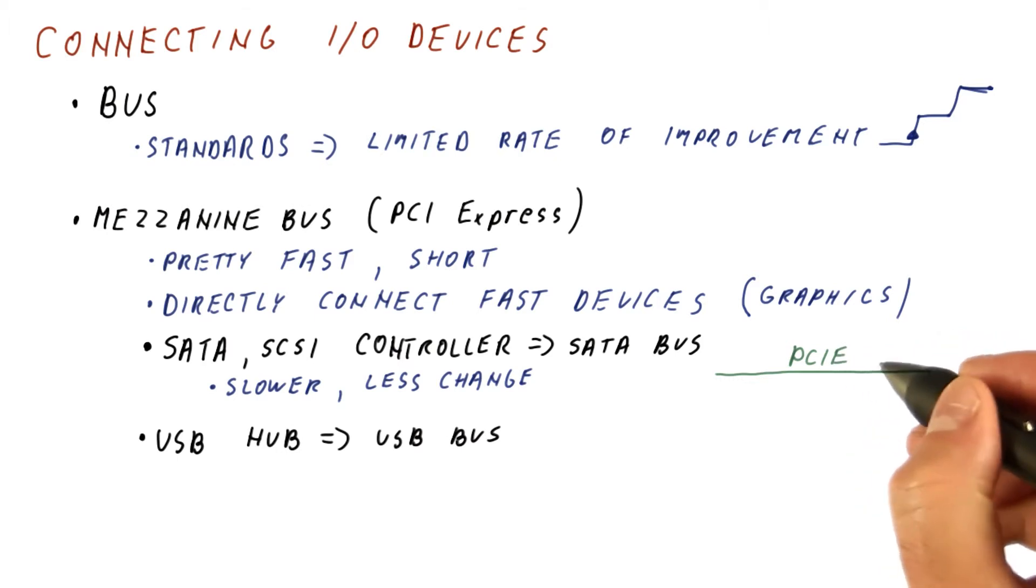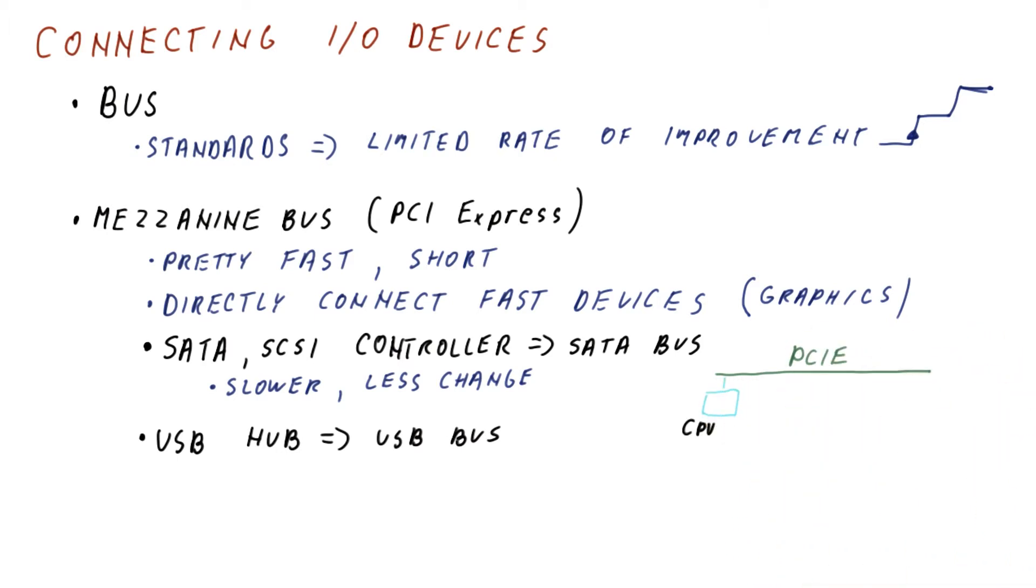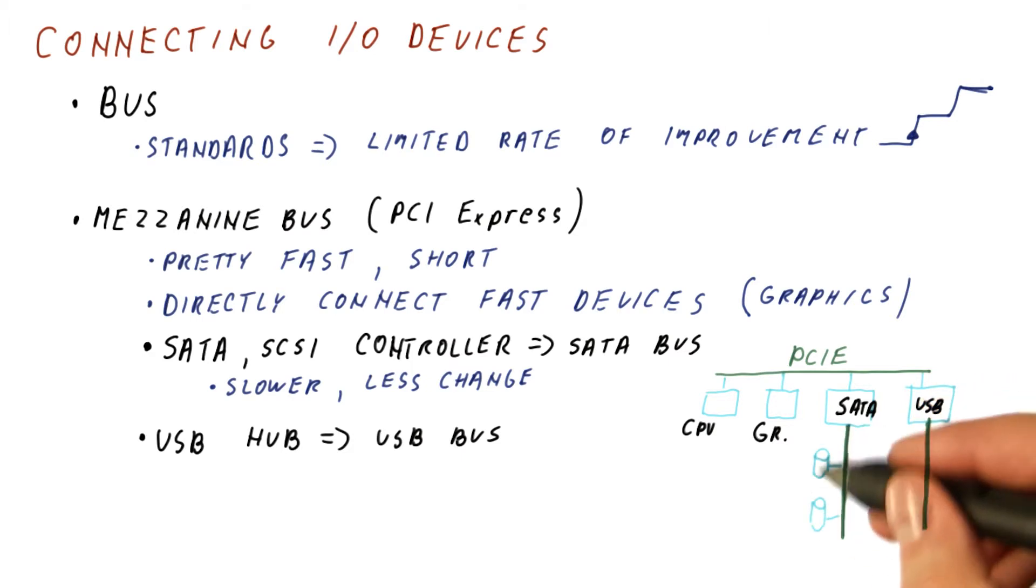Overall, we can have a PCI Express bus to which we attach the processor, graphics, the I/O bus control for disks, and for USB. These in turn provide buses to which we can attach disks and all sorts of devices.